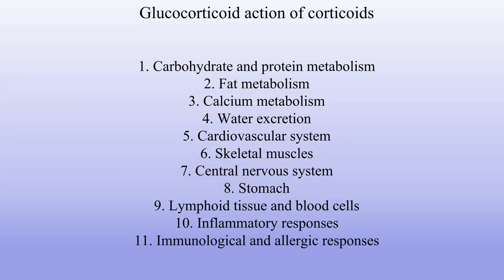Now let's take a look in detail on all glucocorticoid actions of corticoids. First, carbohydrate and protein metabolism. Second, fat metabolism. Third, calcium metabolism. Fourth, water excretion. Fifth, cardiovascular system. Sixth, skeletal muscles. Seventh, central nervous system. Eighth, stomach. Ninth, lymphoid tissue and blood cells. Tenth, inflammatory responses. And eleventh, immunological and allergic responses.